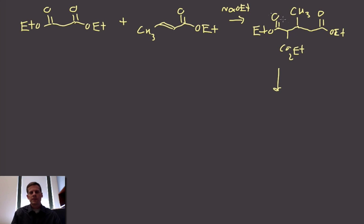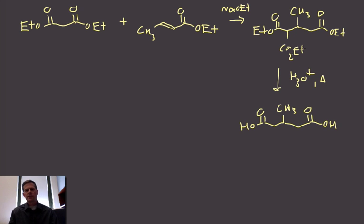There's our Michael addition product. If we do the decarboxylation step, what we'll be left with is a diacid. We're excising that carboxyl group and we'll also get hydrolysis, so we'll get to this 1,5-diacid where that methyl group was originally on the Michael acceptor. You can see it's a 1,5-dicarbonyl, which cues you in that it's a Michael reaction.